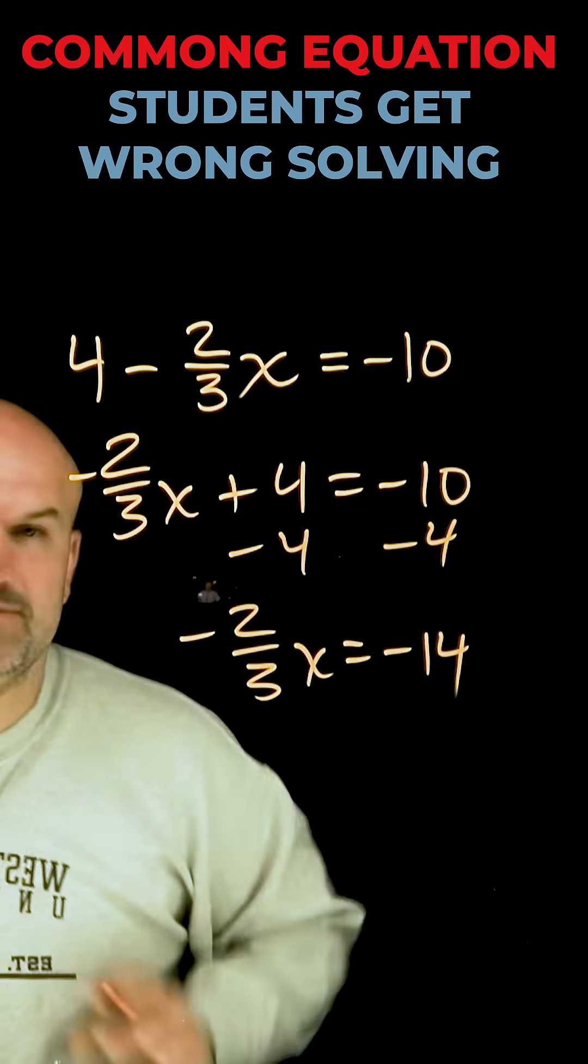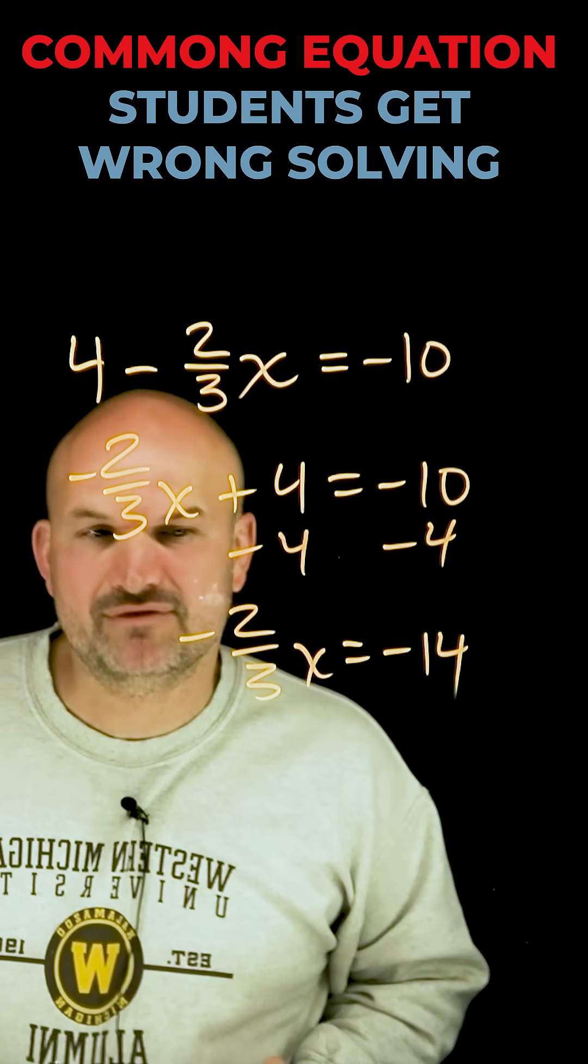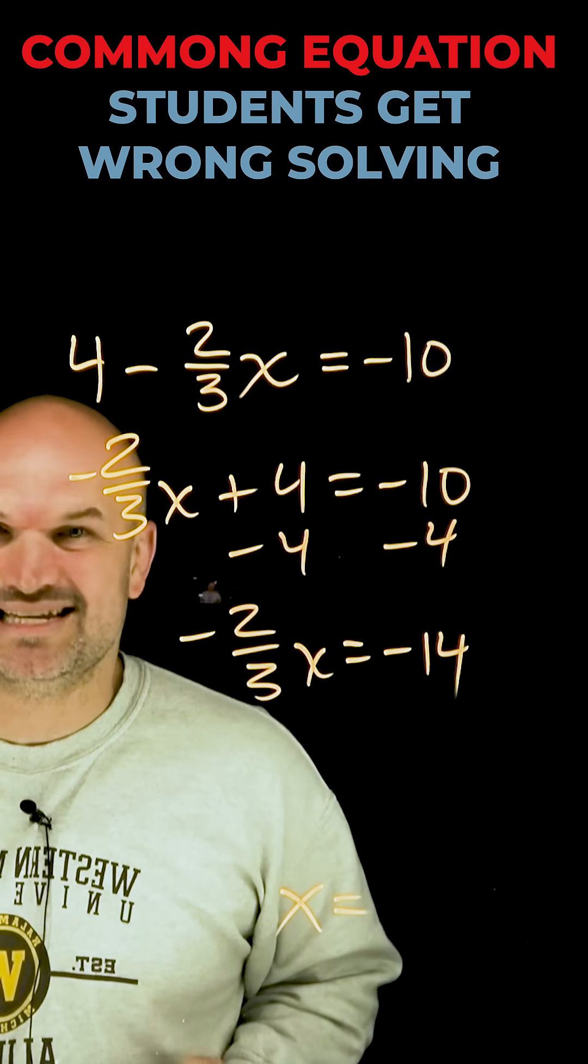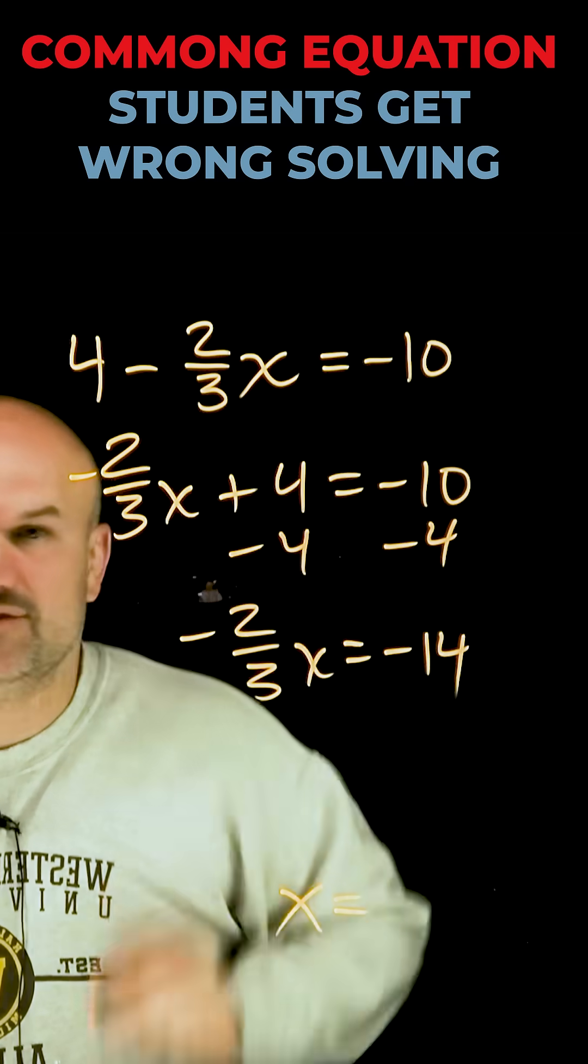Now when trying to undo multiplication by a fraction, I really don't like dividing by fractions. There's nothing wrong with it, but the main goal is to get X equals—we want 1 in front of the X.